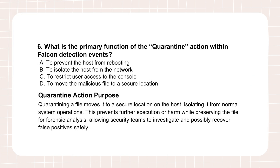Now compare that to question six, which talks about the quarantine action for detection events. It sounds similar, but it's different. The source points out its primary function is distinct: containment is about the host's network. Quarantine — answer D — is about moving a malicious file to a secure location on that host. So containment equals host network isolation; quarantine equals file neutralization. The explanation says quarantine isolates the file to stop it running or causing harm on that specific machine, but keeps the file there for later analysis. One deals with network access, the other with a specific file's activity.